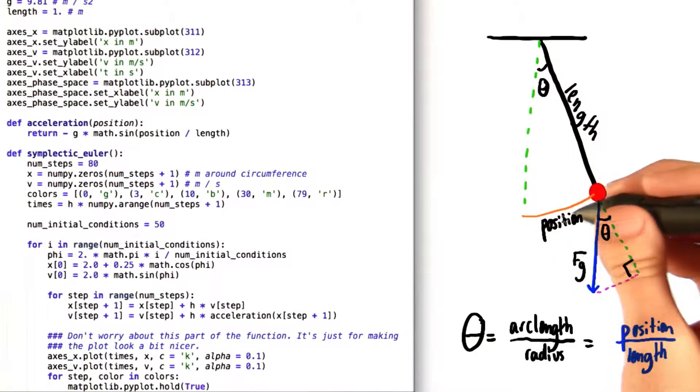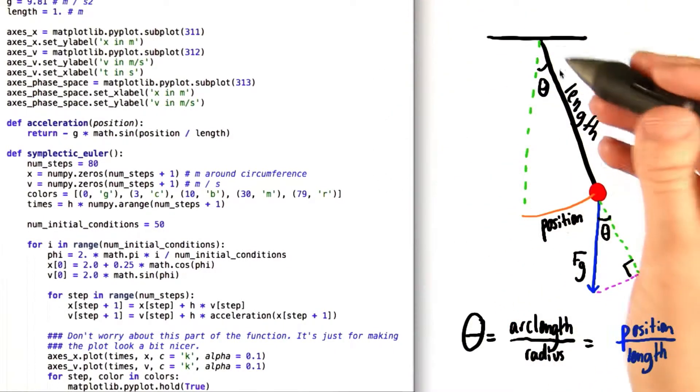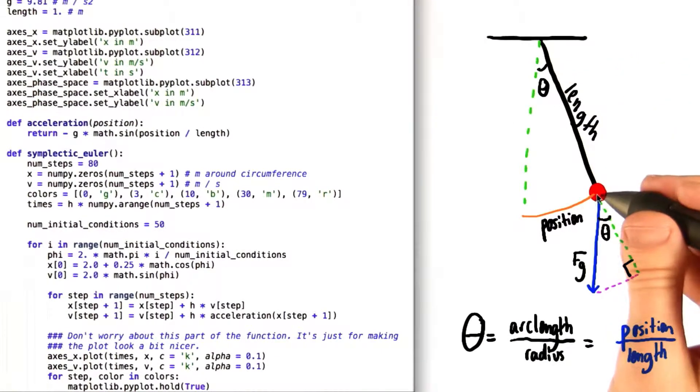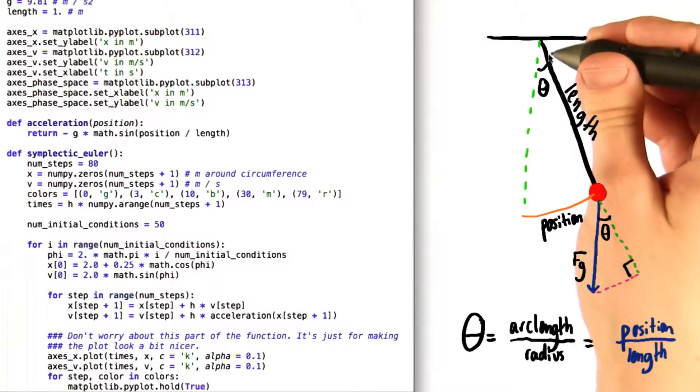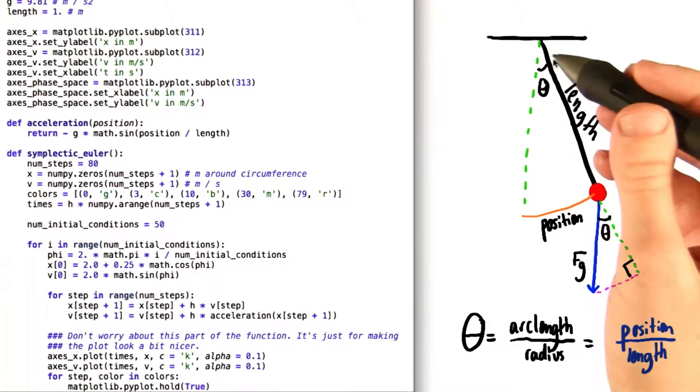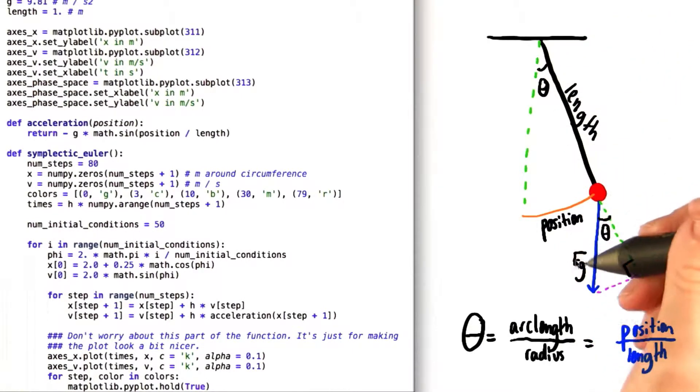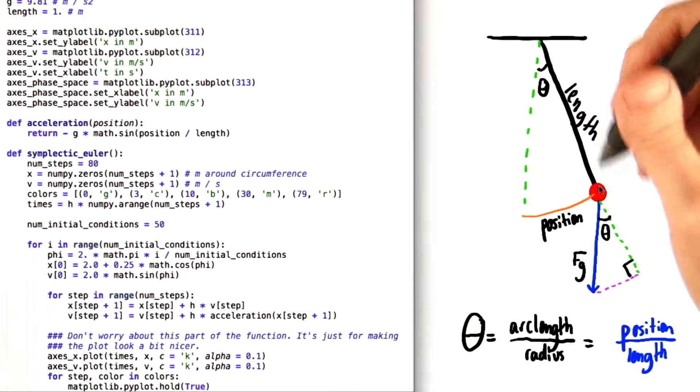Since position is just the arc length right here of this imaginary circle, then the measure of that angle in radians is going to be equal to the length of the arc that it corresponds to divided by the radius of that circle. So that means that in our case theta is equal to arc length over radius or position over length.